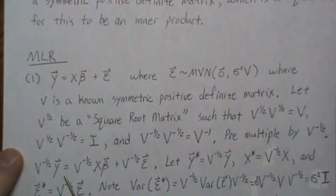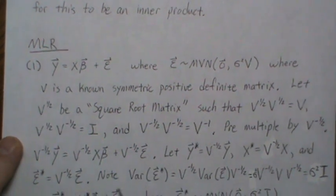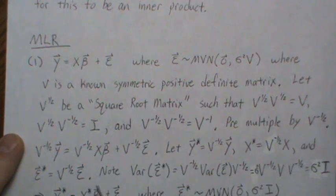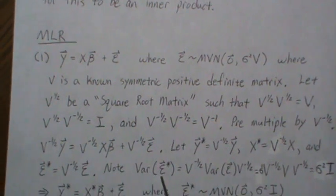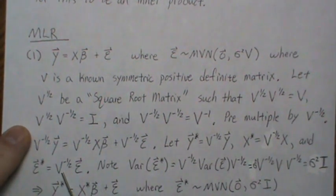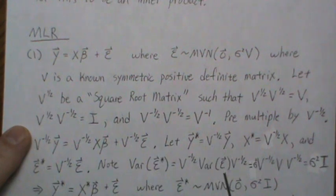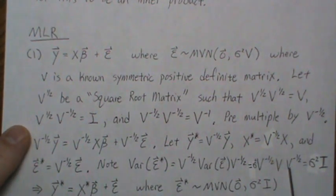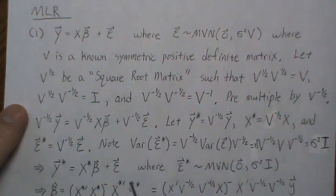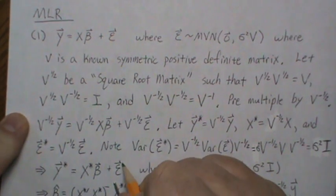After pre-multiplying by V^(-1/2) we reparameterize: y* = V^(-1/2)y, X* = V^(-1/2)X, and ε* = V^(-1/2)ε. Note that the variance of ε* is: we take V^(-1/2) out front and V^(-1/2) in the back — they're symmetric so no transpose is needed — and the variance of ε in the middle is σ²V, so those cancel to give σ²I. Our new model is y* = X*β + ε*.